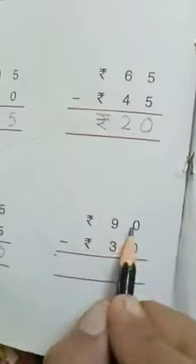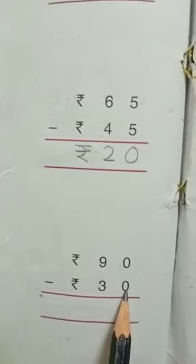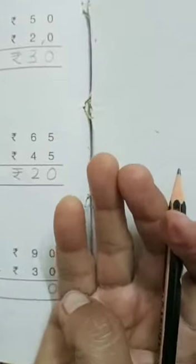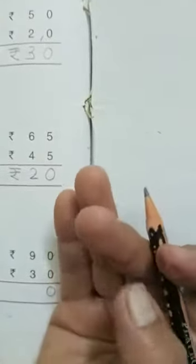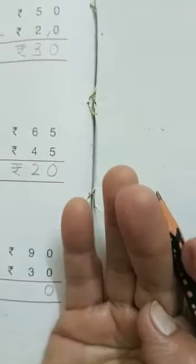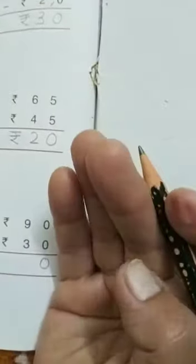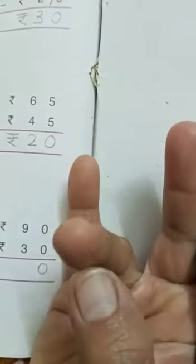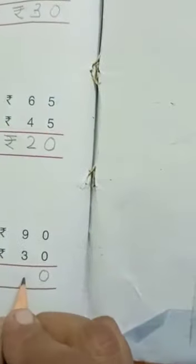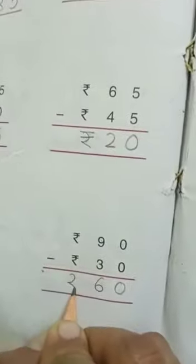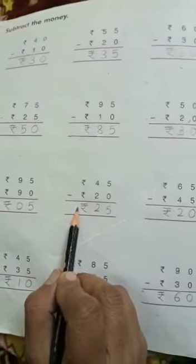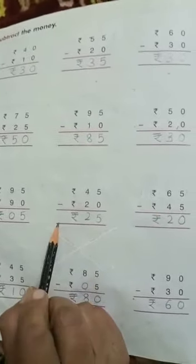Now next: rupees 90 minus rupees 30. 0 minus 0 is 0. And 9 minus 3: count 1 through 9, take away 3: 1, 2, 3. How many numbers are left? 1, 2, 3, 4, 5, 6. Answer is rupees 60. Now you will do the same page in your math book and revise the same page in your rough notebook also. Thank you.